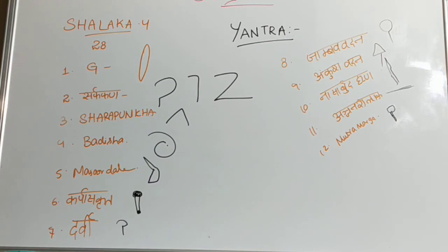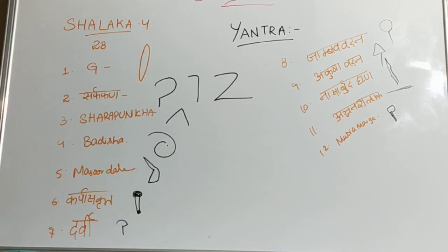Next, Karpasakrita Ushiniya — it resembles a cotton swab. That is the sixth one, and there were 6 in number. Next, Darwimukha — there were 3 in number. Remember, 3 Darwimukha Yantra. The tip will be a ladle shape, used for application of Kshara. Darwimukha Shalaka Yantra is the type of Shalaka Yantra used for the application of Kshara — this you have to remember.